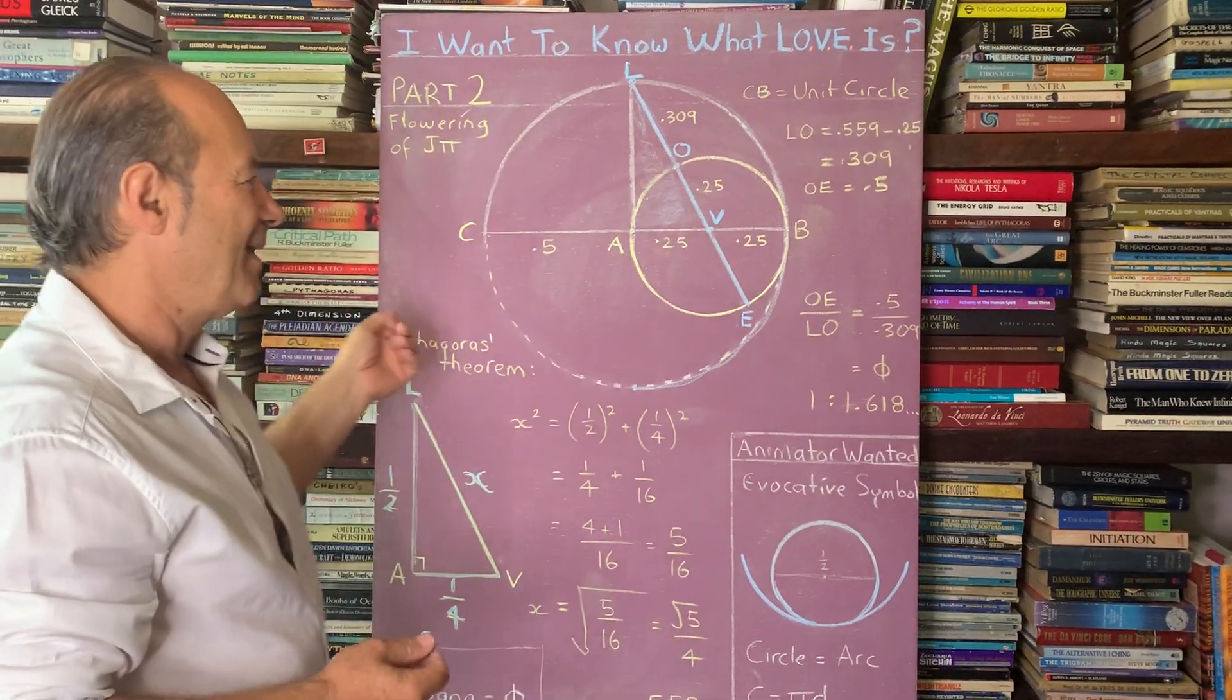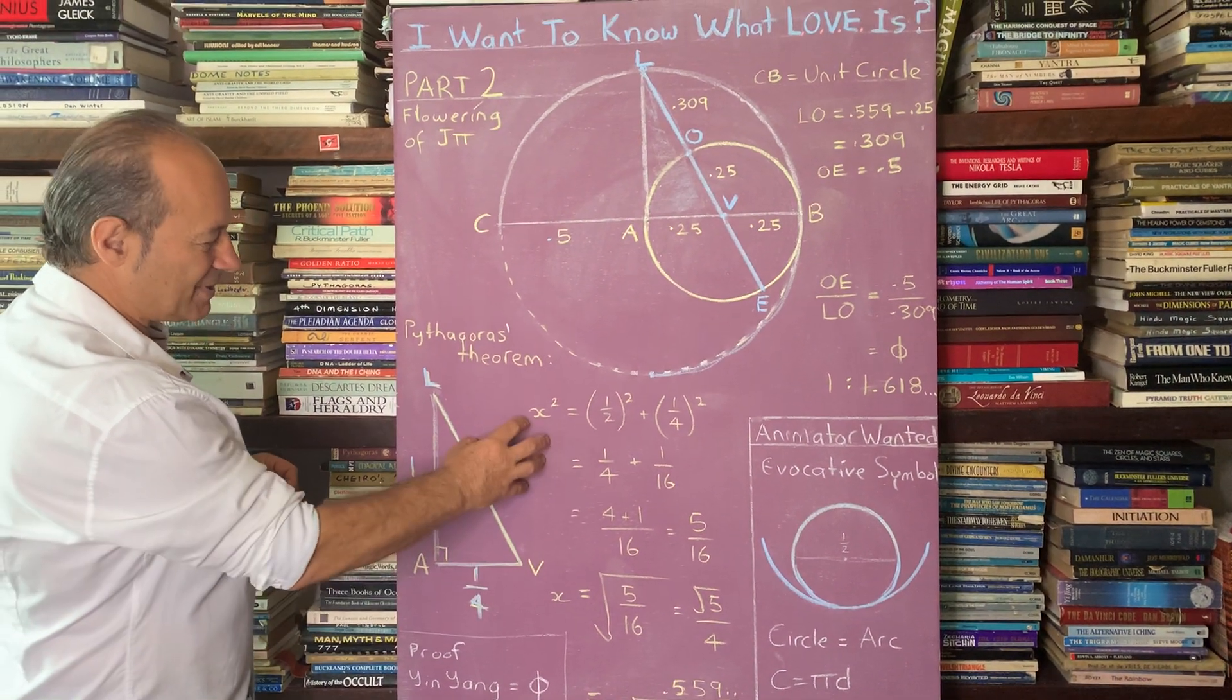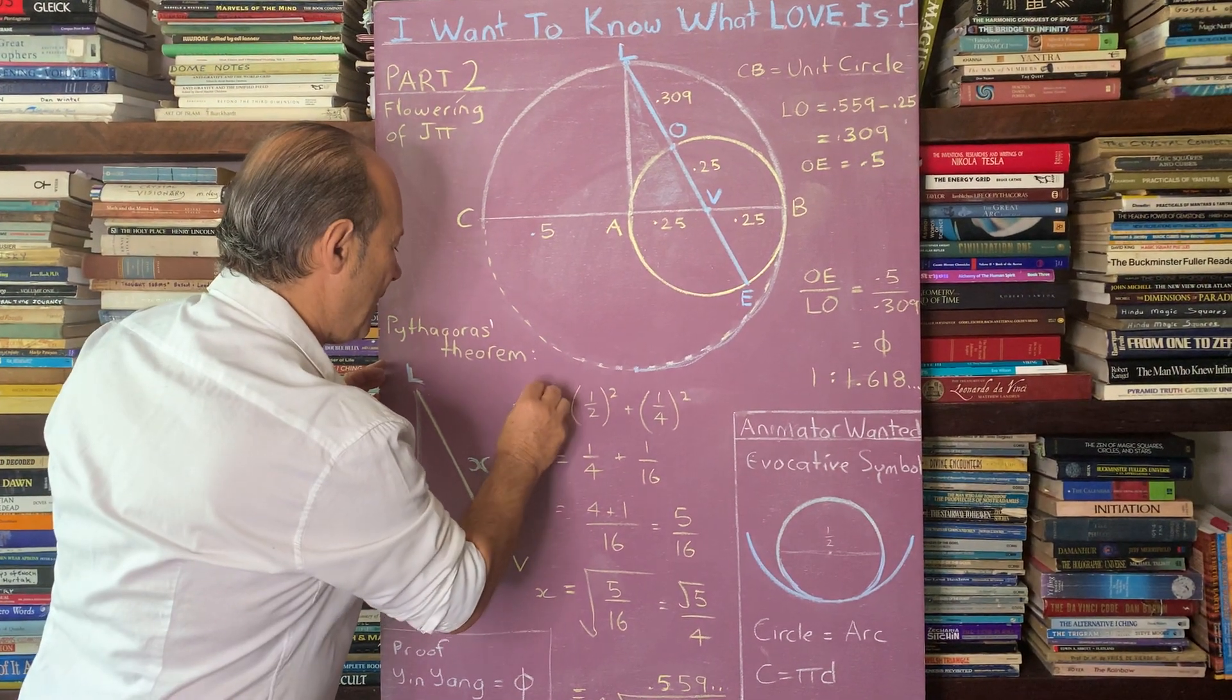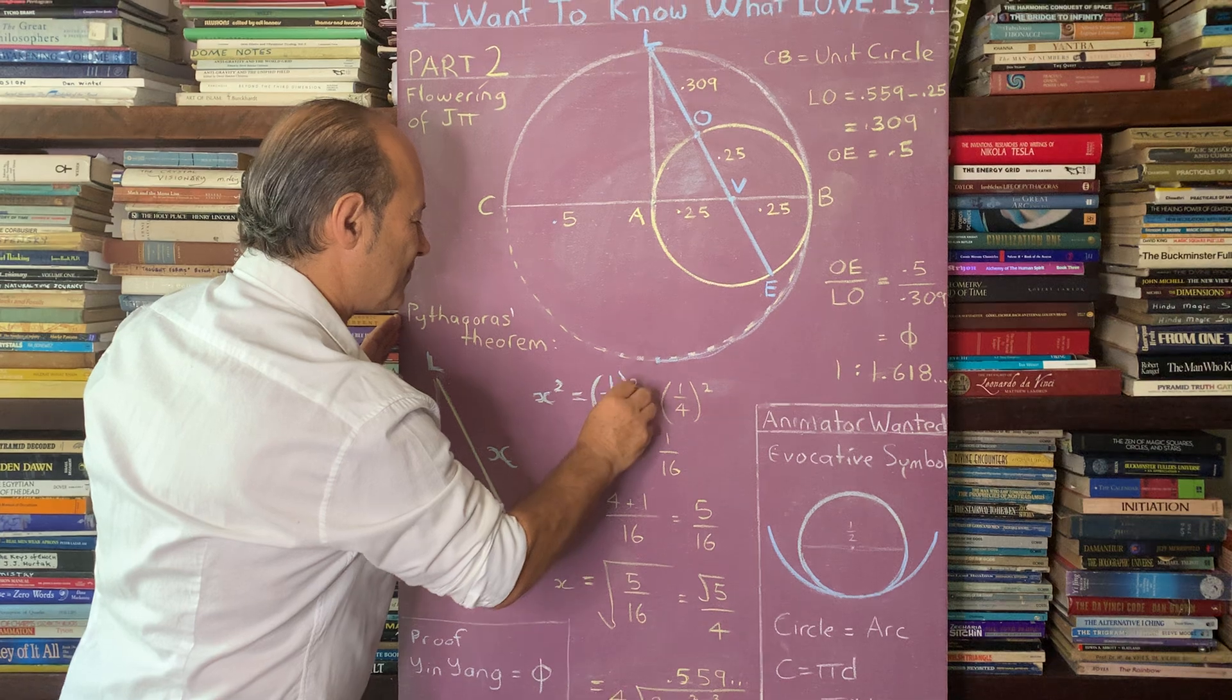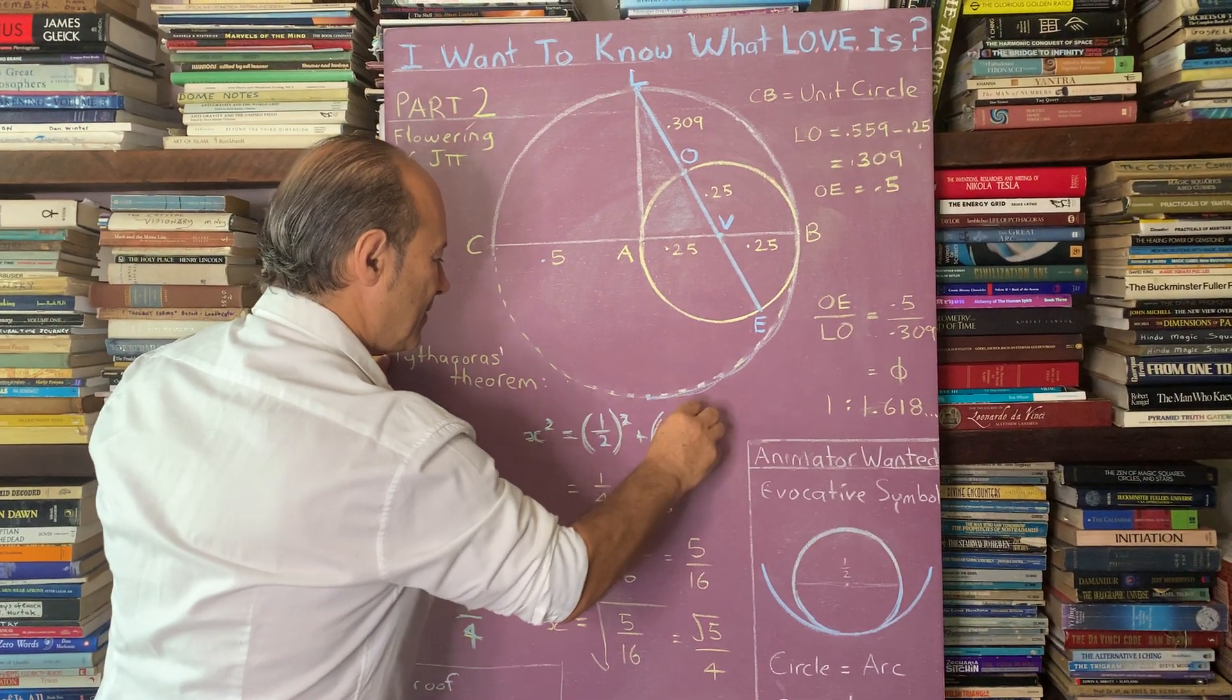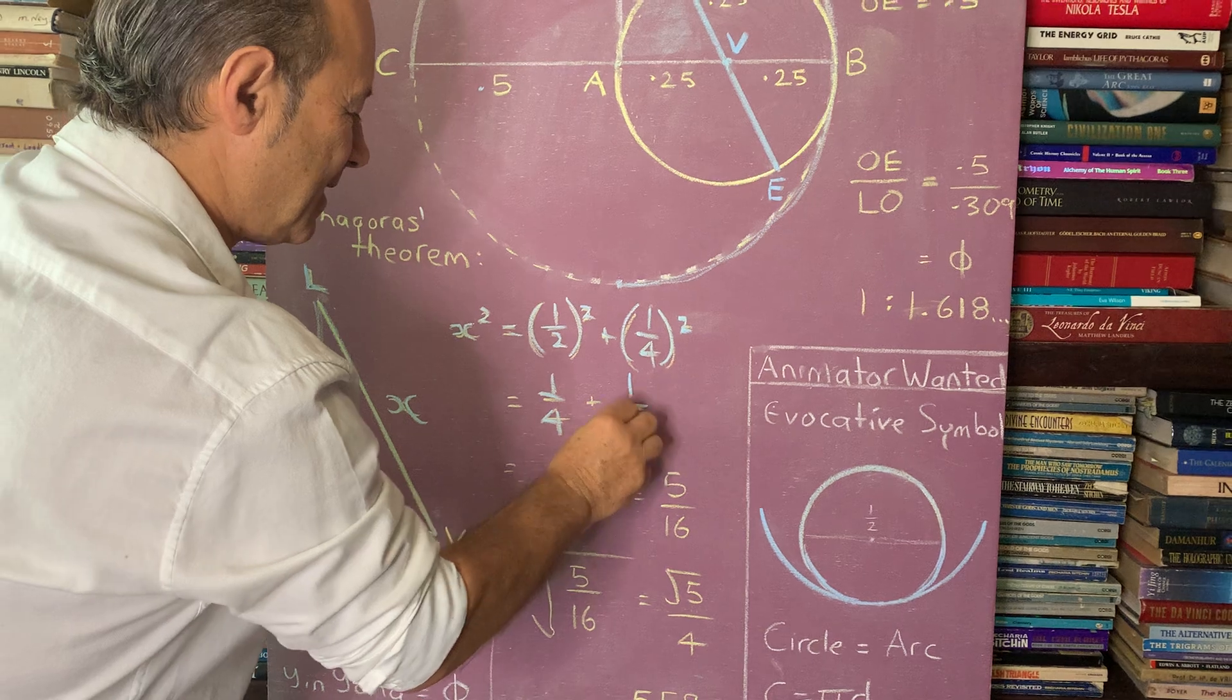We can't show without this. So we know that the square on this plus the square on that equals the square on this side. So X squared equals half squared plus a quarter squared. That's all it is. It's just like 3 squared plus 4 squared equals 5 squared. So a half squared is a quarter, and a quarter squared is a sixteenth.